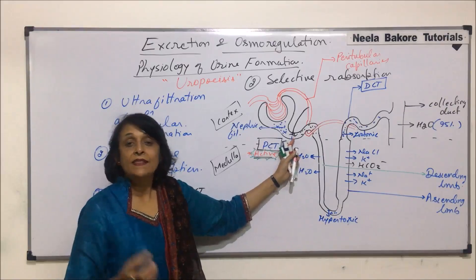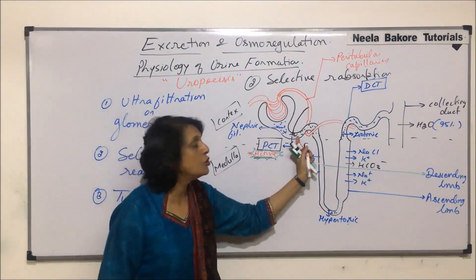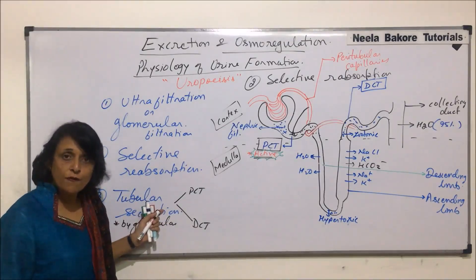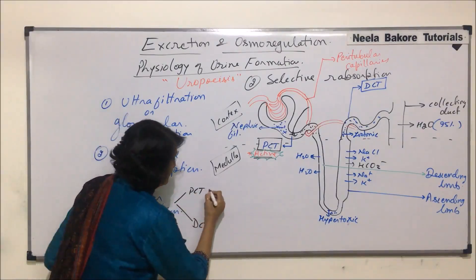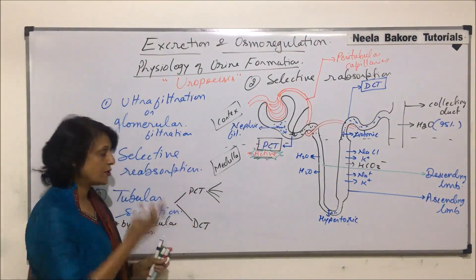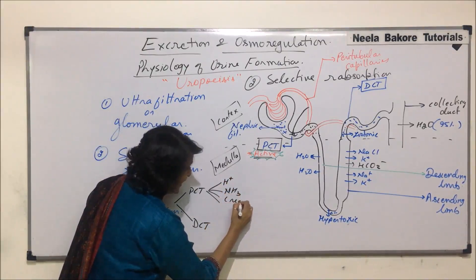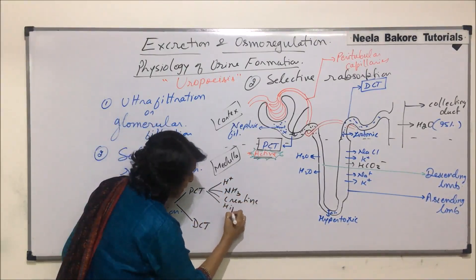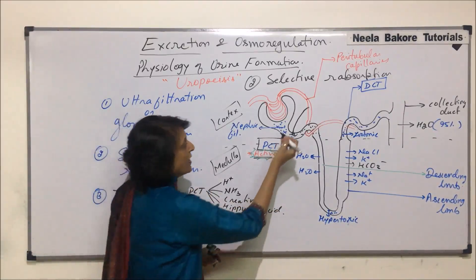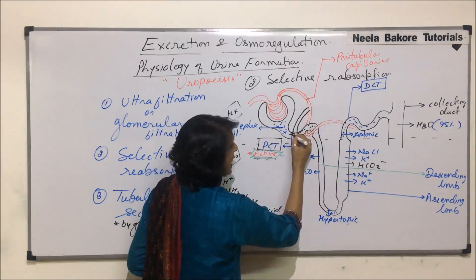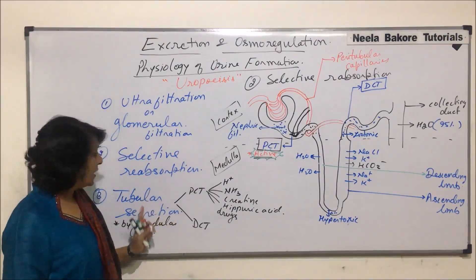These glandular cells absorb the waste which is in the blood and pour that secretion into the tubule — that is why we call it tubular secretion. PCT helps in removal of certain substances: excess of hydrogen ions, ammonia, creatine, hippuric acid, and drugs. These substances are absorbed by the glandular cells and poured into the filtrate by PCT.